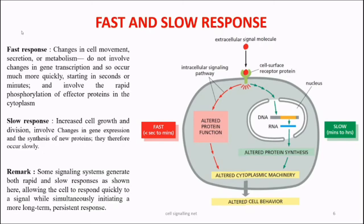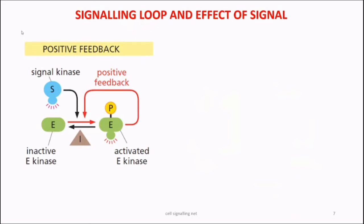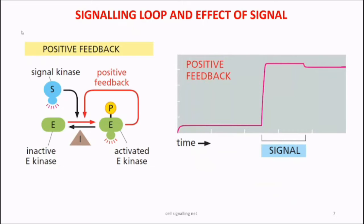The next topic is signaling loops and the effect of a signal. When a signaling kinase S is activated in response to a particular signal, it phosphorylates protein E, activating it. This activated E kinase then phosphorylates other inactive E proteins, generating a positive feedback loop. Over a specific time period, more and more inactive E proteins will be activated both by the signal kinase S and the activated E kinase, creating a specific response shown graphically.